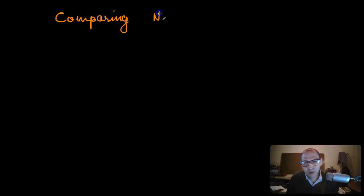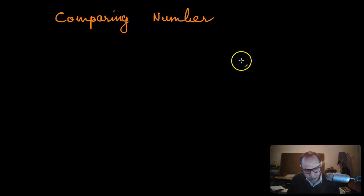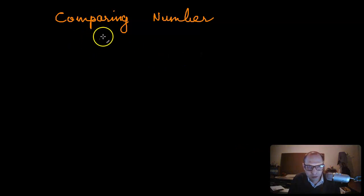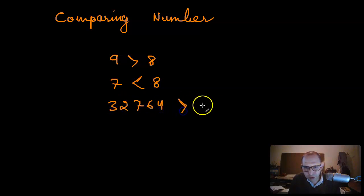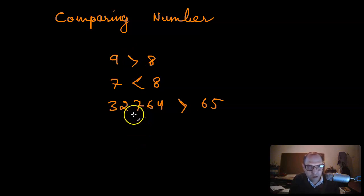Hello and welcome back. In this video we will talk about comparing numbers. Comparing numbers simply means that you have two numbers and you want to compare them — to specify which one is greater and which one is smaller. For example, nine is greater than eight, seven is less than eight, or 32,764 is greater than 65. That's essentially comparison, or comparing numbers.